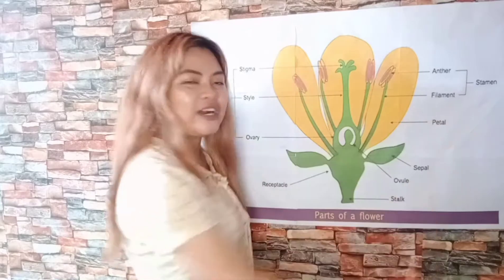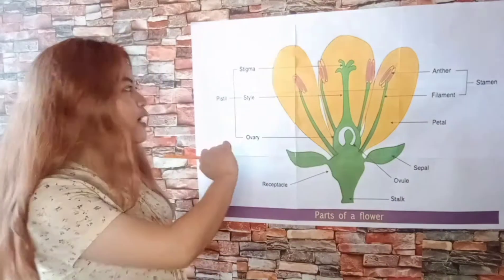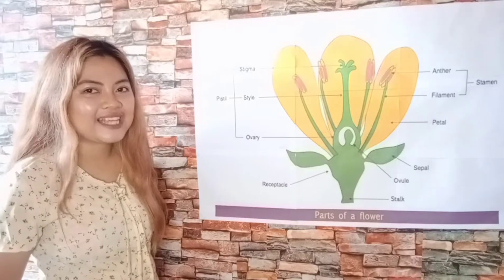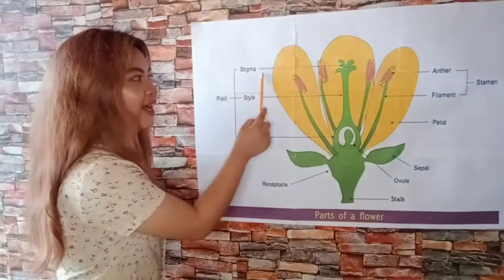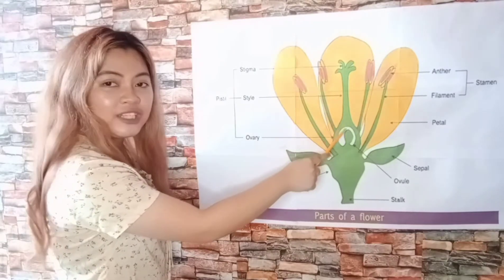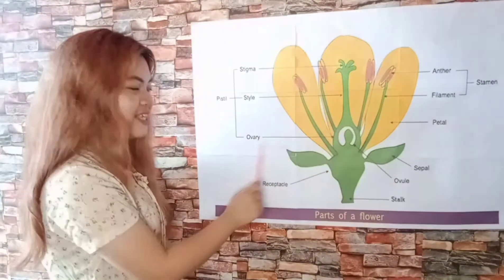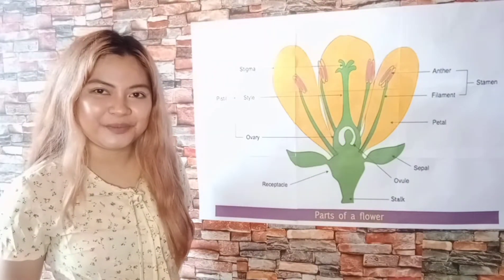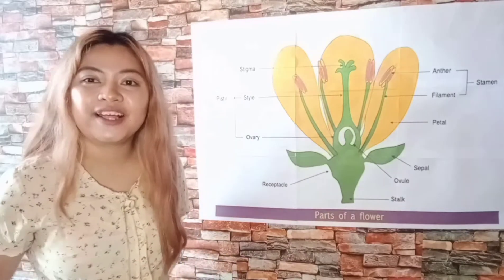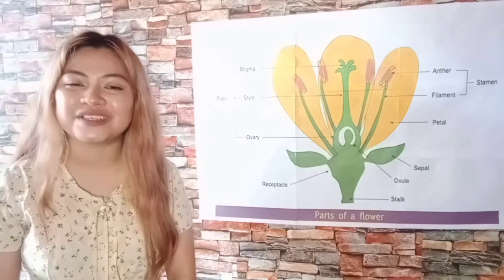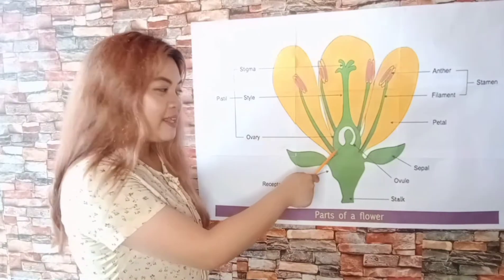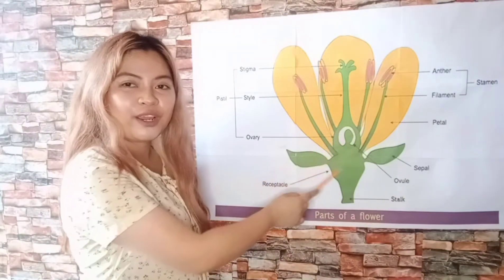Since we have the stamen as the male reproductive part, let's proceed to the pistil, which is the female reproductive part. It has three parts: the stigma, which is the sticky part of the flower; the style, which is the passageway leading down to the ovary; and the ovary, which produces ovules — the female gametes.